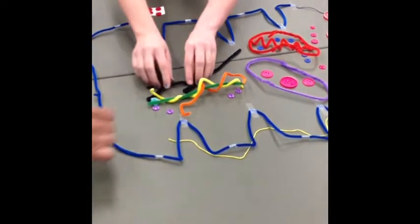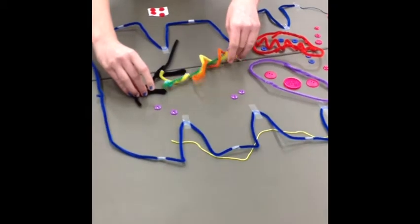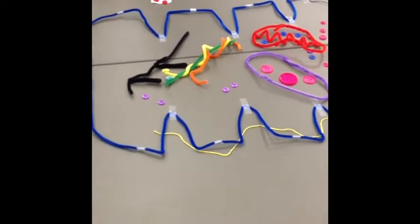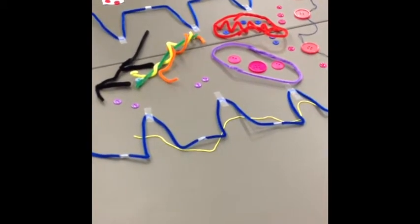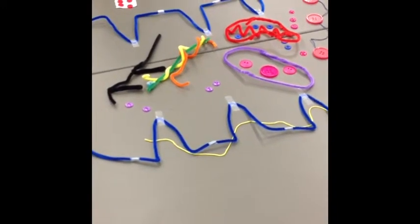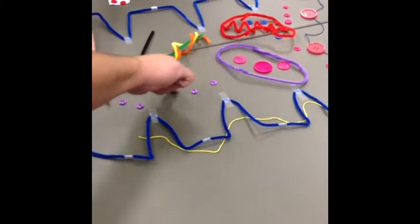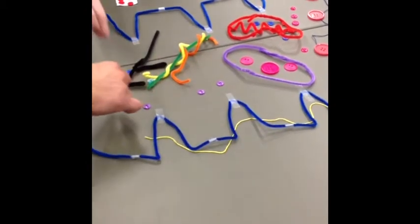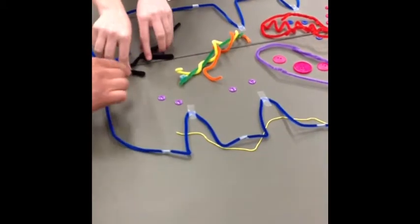The myosin head then moves to a lower energy state releasing ADP. ADP is represented by the red button and moves the thin filaments over the thick filaments. This is called the power stroke.